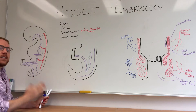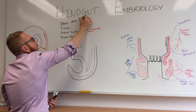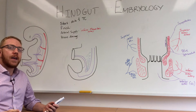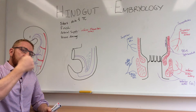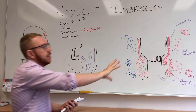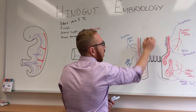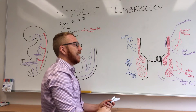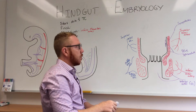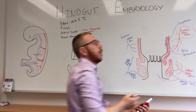The start of the hindgut is the distal one-third of the transverse colon. Everything below that is a hindgut structure — endodermal derivatives of the gut tube. These include the distal one-third of the transverse colon, the descending colon, sigmoid colon, rectum, and then the anal canal. Breaking the anal canal into thirds: the superior two-thirds is essentially hindgut, so that's endodermal, and its blood supply is the superior rectal artery.